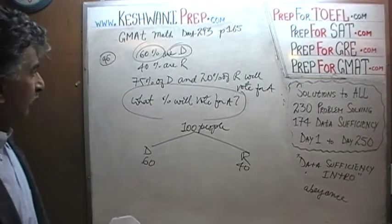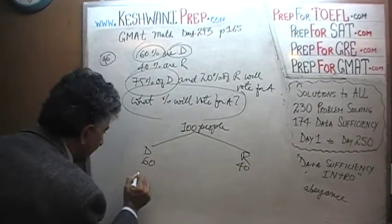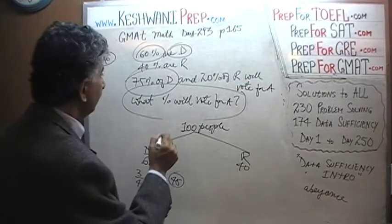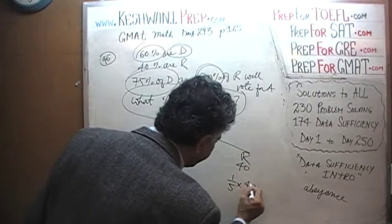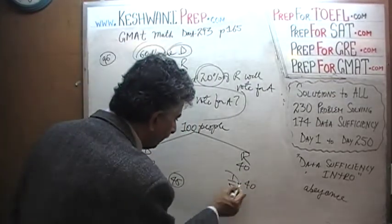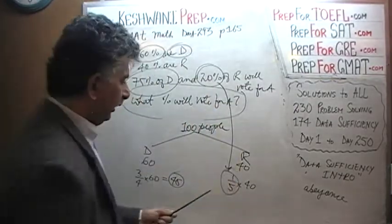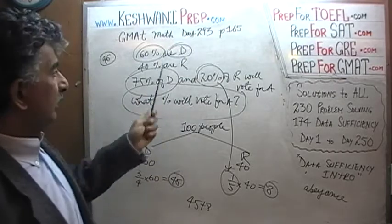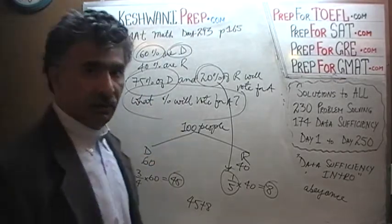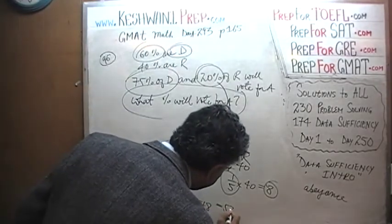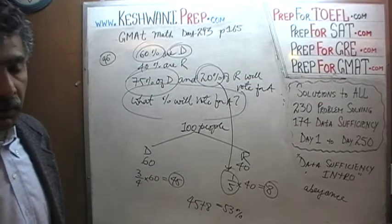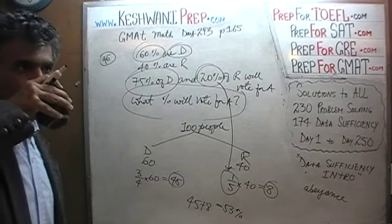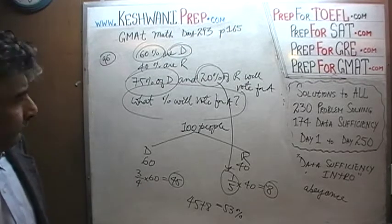They further go on to tell us that 75% of the Democrats. 75% of the Democrats is 3 fourths of the Democrats. 1 fourth of 60 is 15, so 3 fourths is going to be 45. And 20%, 20% is 1 fifth. This 1 fifth is coming from this 20% right here. 20% is 1 fifth. And 1 fifth of 40 is 8. That's it. We are done. So 8 plus 45 out of 100. And since we started out with 100, we don't have to do any work at all. This is our answer. 45 plus 10 is 55, so it's 53%. 53% of the people apparently voted for candidate A based on the fact that 60% of the Democrats and 20% of the Republicans voted for him.